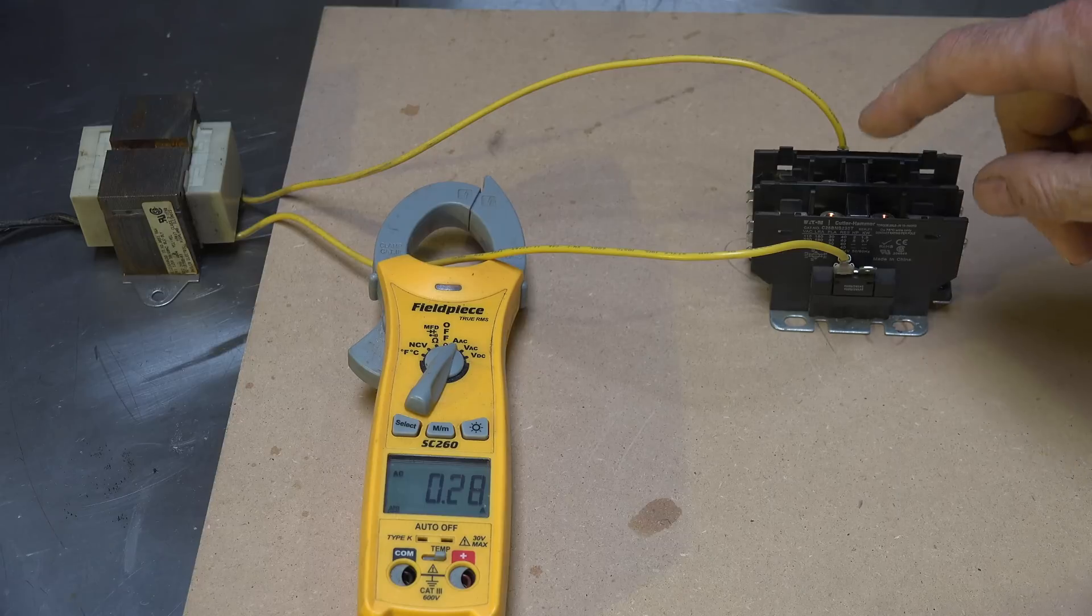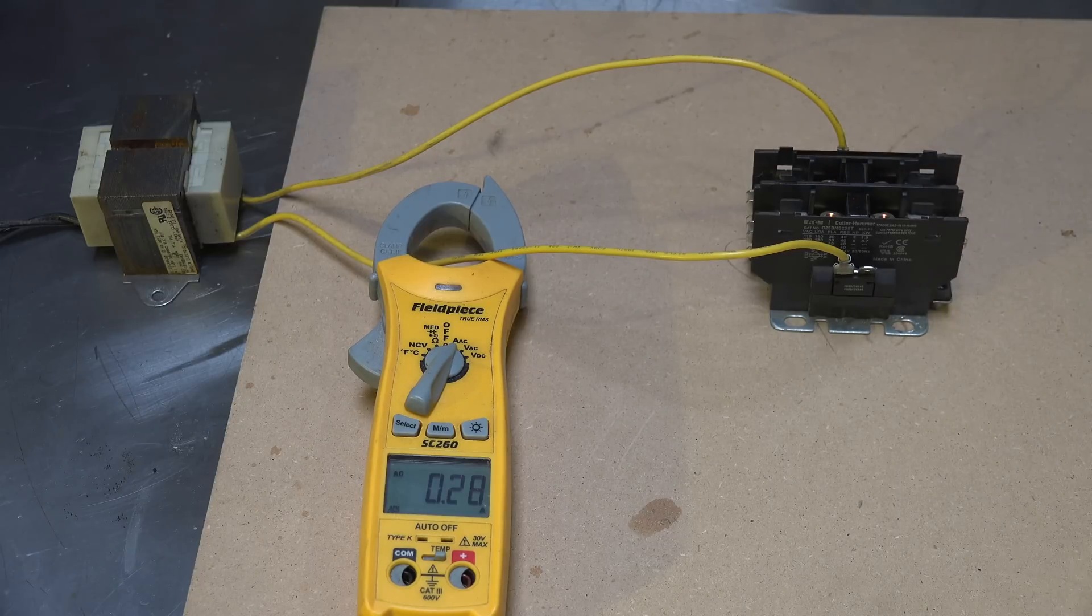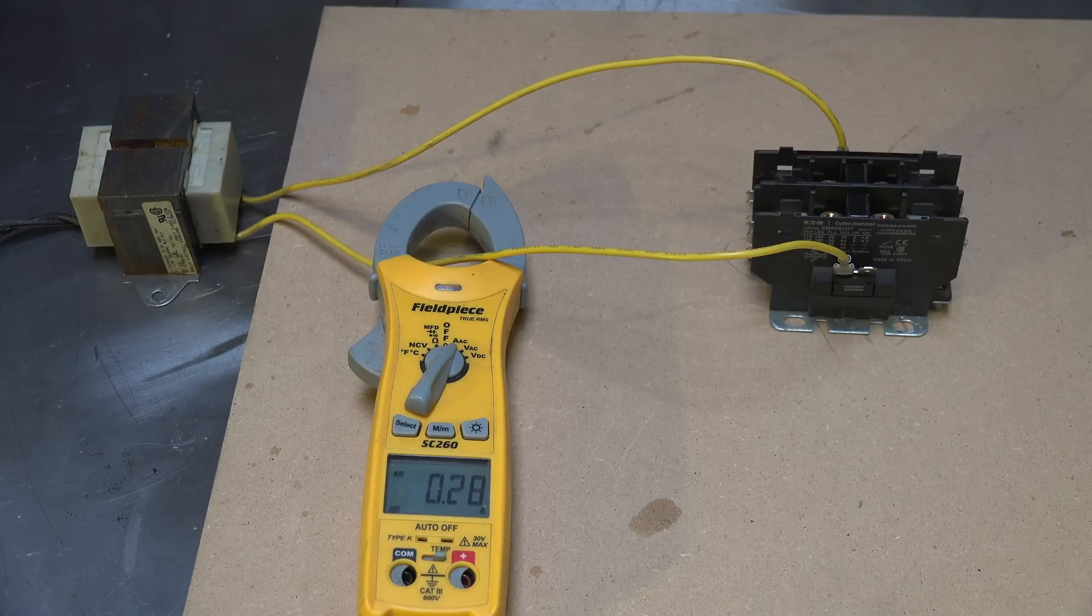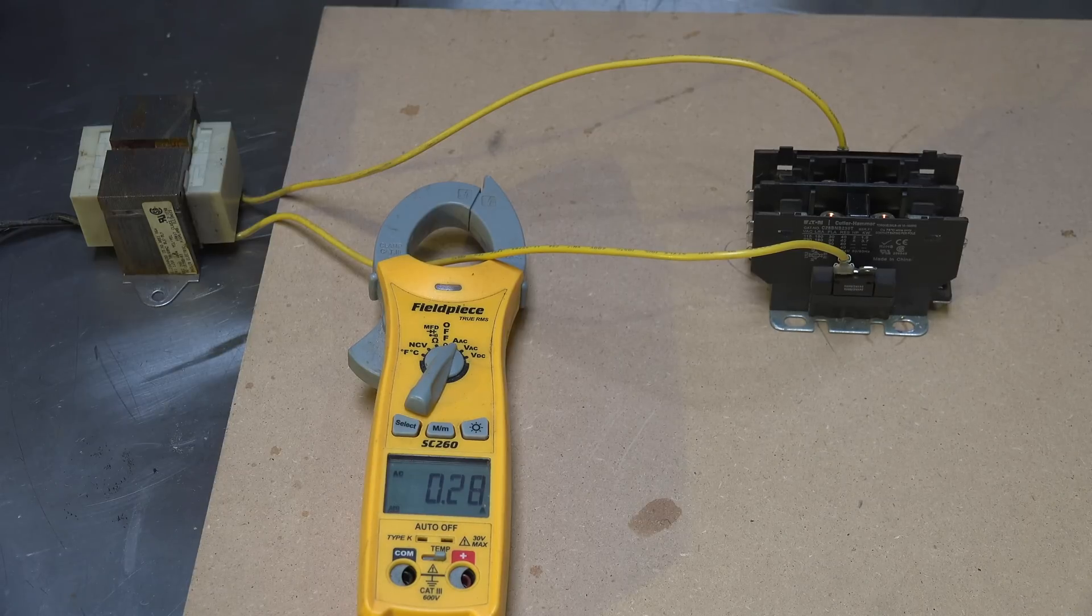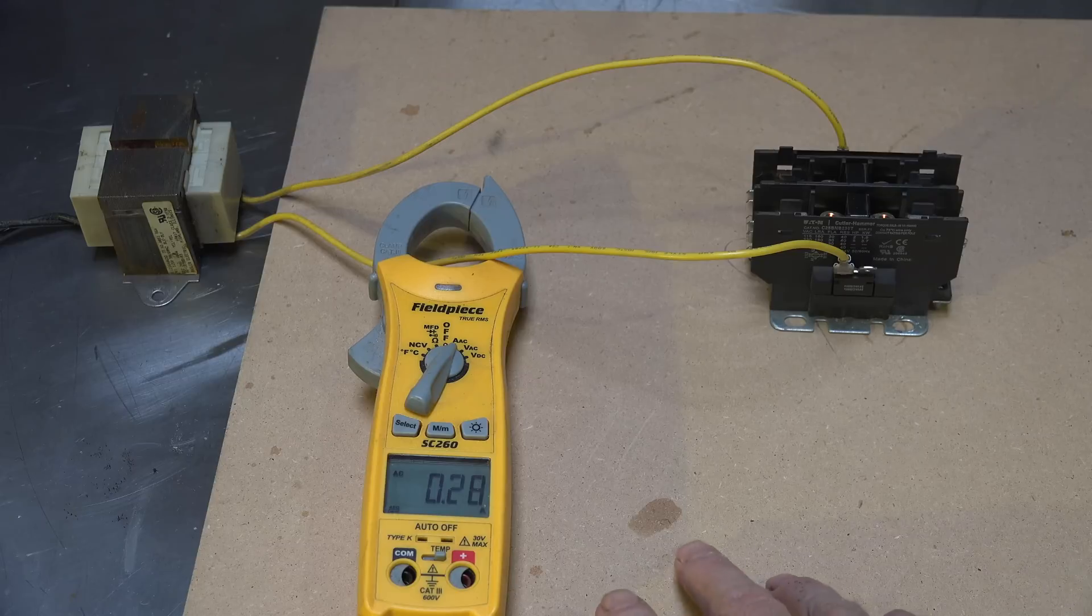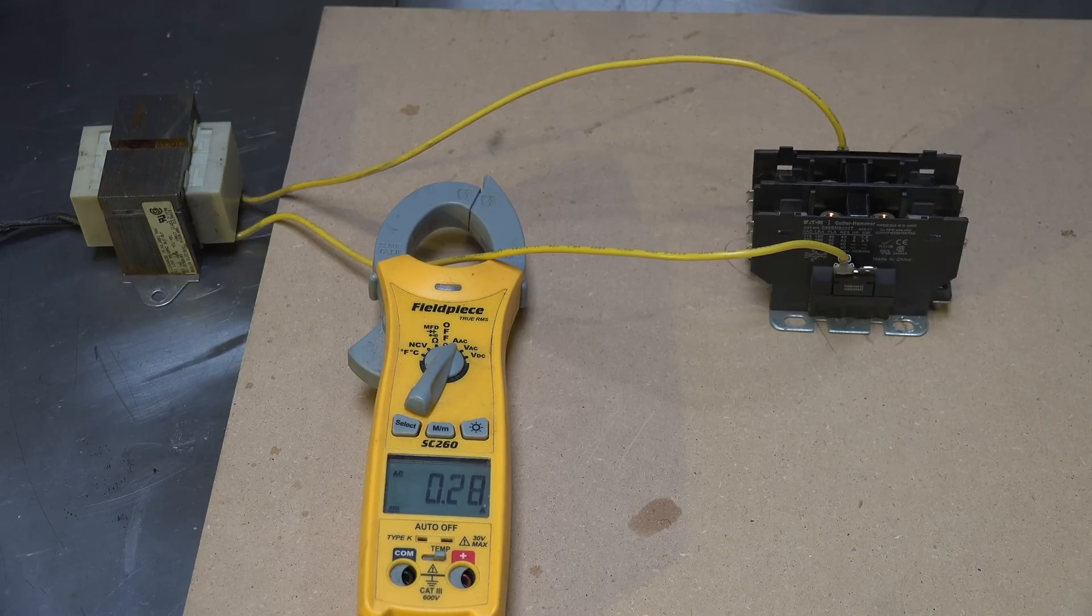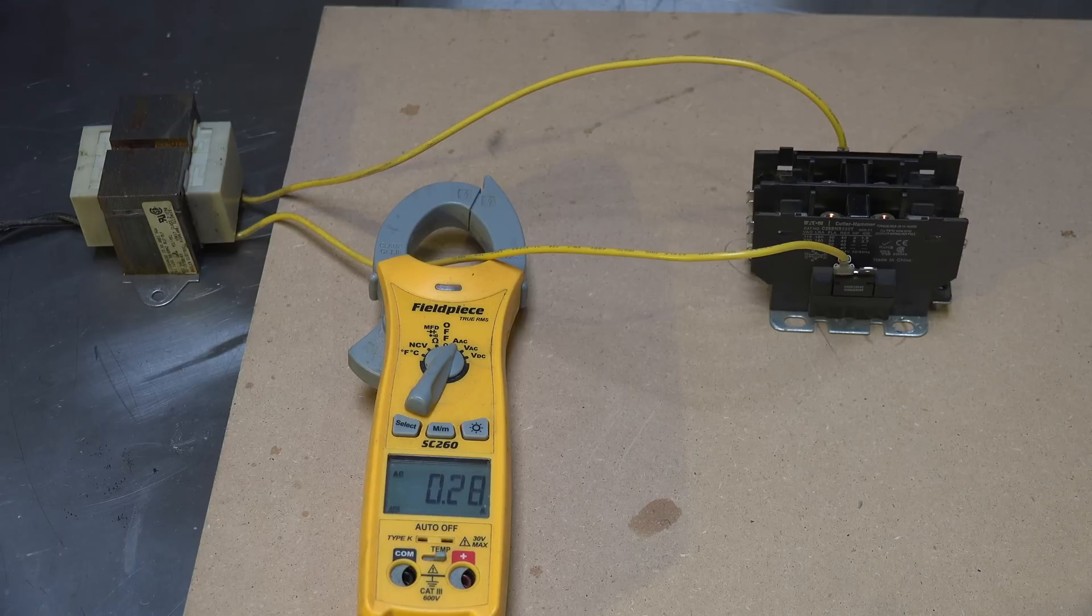Of course that'll burn the coil up on the contactor if it doesn't pull in, but why does it do that? Okay, right here I've got a contactor. I'm drawing 0.28 amps at 24 volts and it is pulled in. Now let's take this thing apart and see what happens.